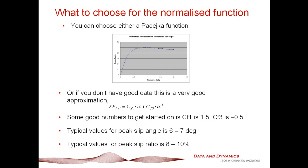For the normalized function — which is our function of alpha or slip ratio — you can either choose a Pacejka function, with force factor plotted against normalized slip in a typical Pacejka curve, or alternatively, a force factor which is a very simple third-order approximation of CF1*alpha plus CF3 times alpha cubed.